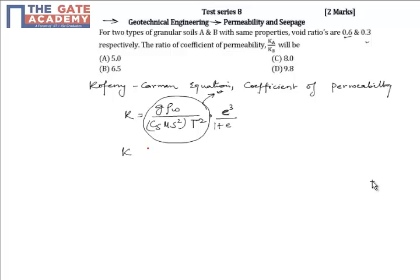Now ka upon kb can be written as ea cubed upon eb cubed, into 1 plus eb divided by 1 plus ea. Putting the values, we get...